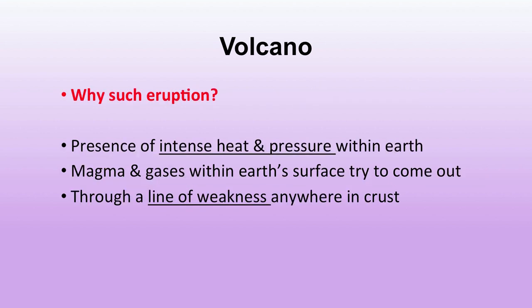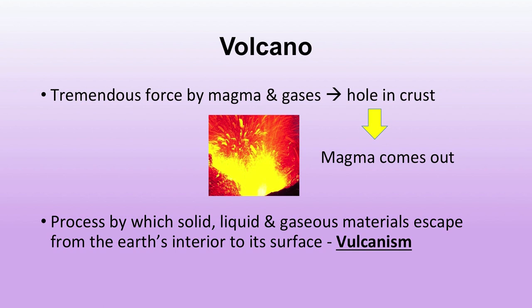Volcanic eruptions occur because extreme heat and pressure inside the earth push the magma out through lines of weakness. Tremendous force of magma or gases comes out from the hole in the earth's crust. The process by which solid, liquid and gaseous materials escape from the earth's interior is known as volcanism — the process of eruption of a volcano.